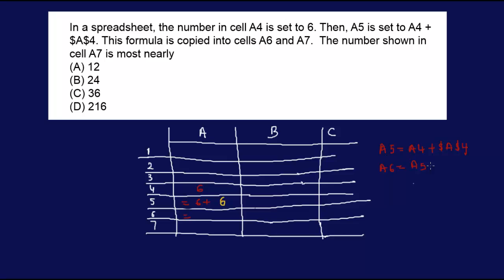So you have A5, and this remains unchanged. So you have A6, which is A5 which is 12, plus the dollar sign A4. I mean the dollar sign value, so that still is 6. Doesn't change.